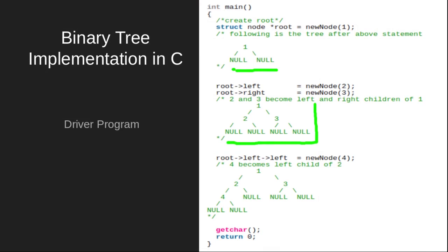The next statement sets root's left child's left child. We know root is one, its left child is two, and two's left child is currently null. We now call newNode(4), which returns a node with value four, and assign it as the left child of two. Our tree now has one as the root, two as the left child, three as the right child, and four as the left child of two — as shown in the diagram.